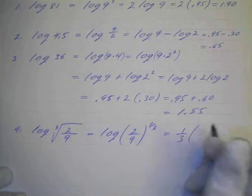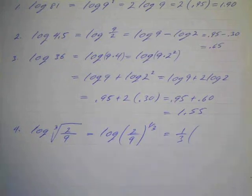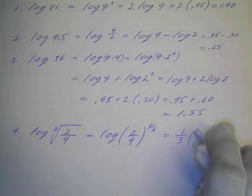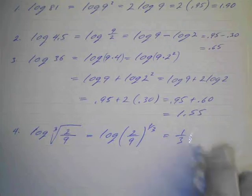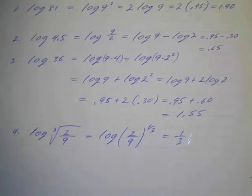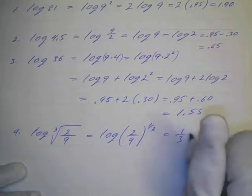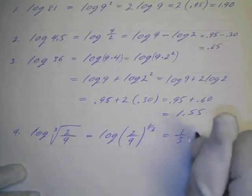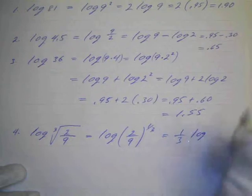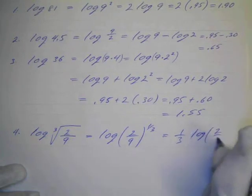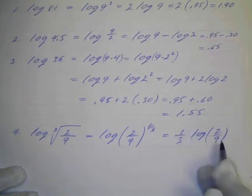And then we can put that one-third in front. We don't really need that parenthesis, so we'll just have one-third log. But we know that that's going to be the quotient rule so we're going to have the log of the difference but we do have to multiply that by one-third.